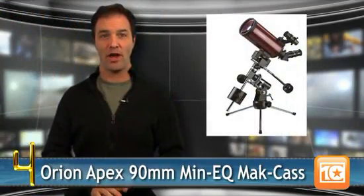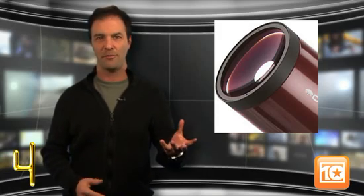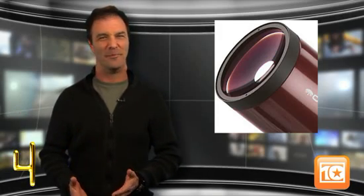At number 4 we have the Orion Apex 90mm Mini-Q Mac CAS. Not only does it come with that long name, but it has a long list of features. One of the best is portability. Lots of stuff, plus a little package, equals awesome. However, the levers and knobs can be a little intimidating for the beginning astronomer, but great 24 hour service is there to guide you through it.